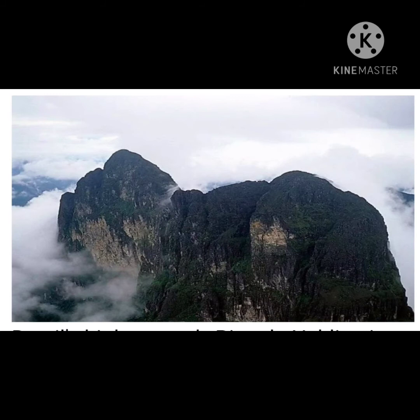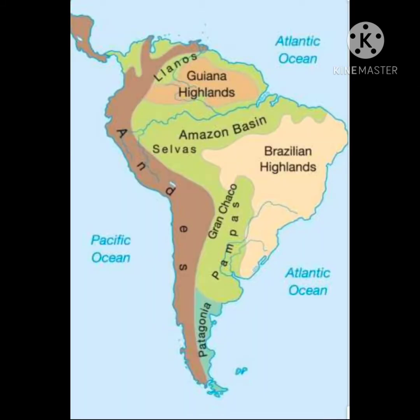The Brazilian highlands increase in height towards the sea, and near the sea they drop suddenly — an abrupt fall. All the rivers that originate from the Brazilian highlands flow inland and join the Parana River, except River São Francisco, which flows into the Atlantic Ocean.